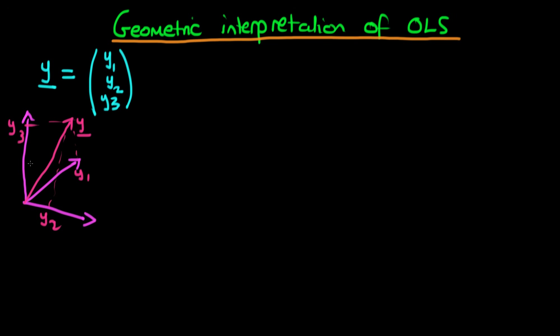The problem is that normally our y is more highly dimensional than ordinary space, so we can't actually draw it using the normal spatial dimensions we have, because typically y might represent a 100-by-one vector of observations. We can't draw it using three spatial coordinate axes, but we can still think about y as representing some vector in a higher-order space, and we can draw it abstractly.